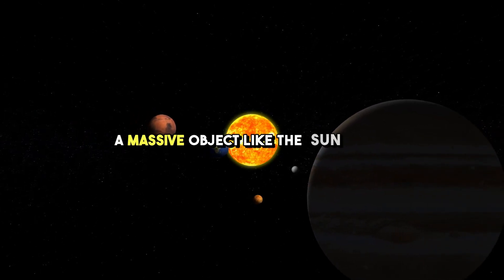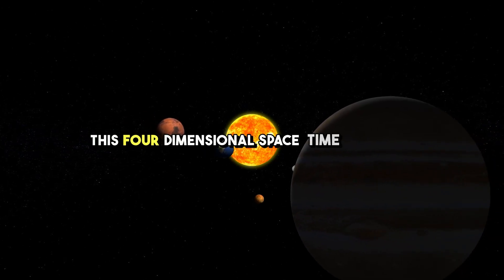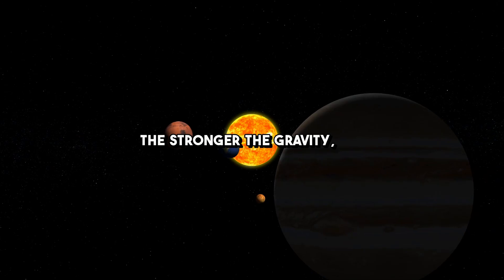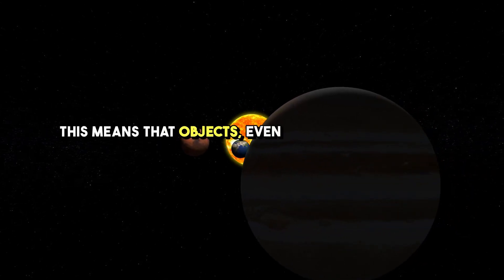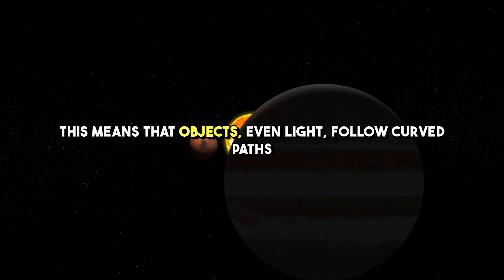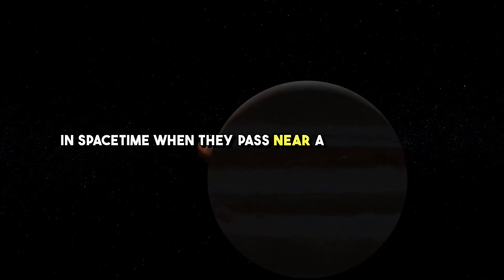A massive object, like the sun, curves this four-dimensional space-time around it. The stronger the gravity, the more space-time is warped. This means that objects, even light, follow curved paths in space-time when they pass near a massive object.